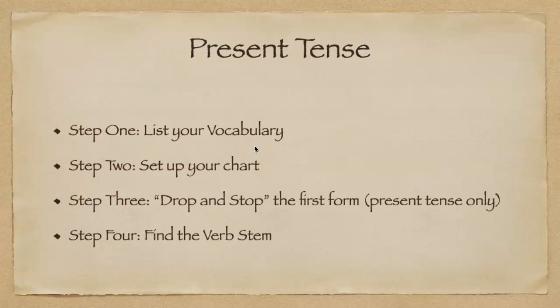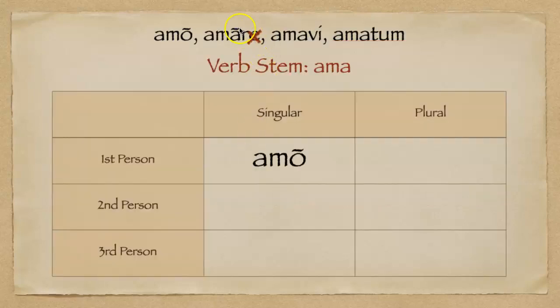Step four: find the verb stem. This is where Latin can get a little violent, because the Romans were a very violent people. To find the verb stem, we're going to go to the second principal part, also known as the infinitive, and we're going to chop off the RE. The part that is left over — AMA — that is called our verb stem.